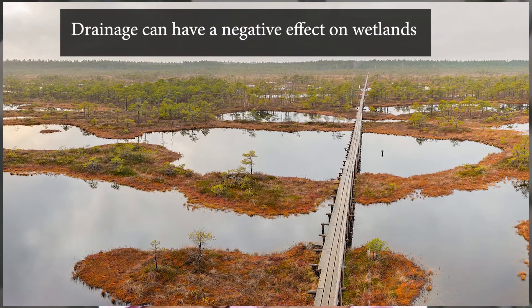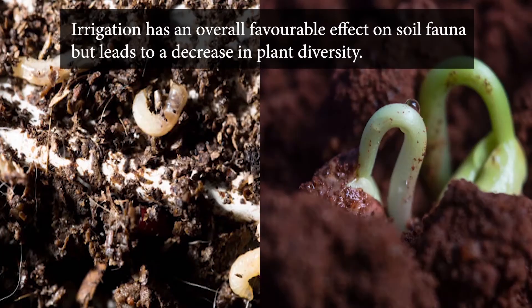Regarding water management at the plot level, either through drainage or irrigation, it can have variable effects on biodiversity. Irrigation of wetlands for agriculture can cause major decline of agrobiodiversity in those areas. Irrigation has an overall favorable effect on soil fauna, but sometimes leads to a decrease in plant diversity. Soil fauna biodiversity is particularly affected by soil moisture conditions, so irrigation also has limitations.